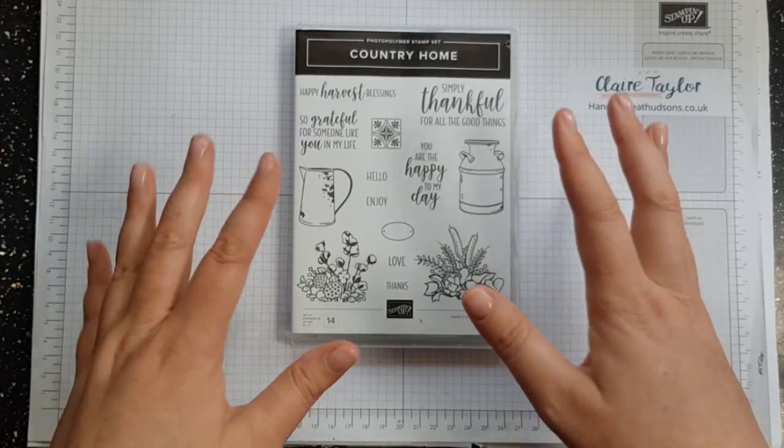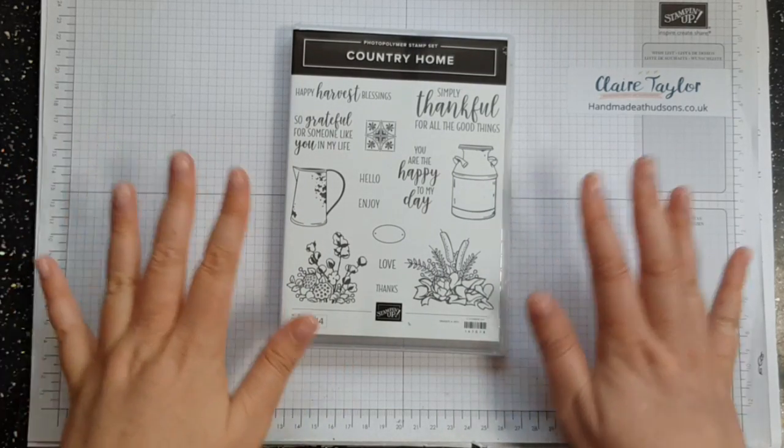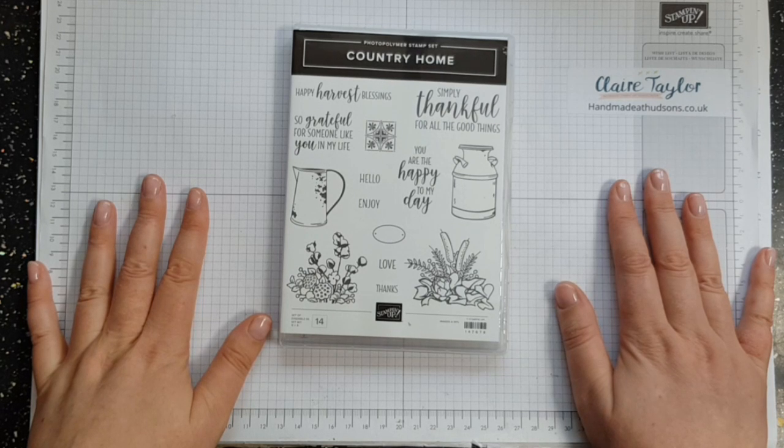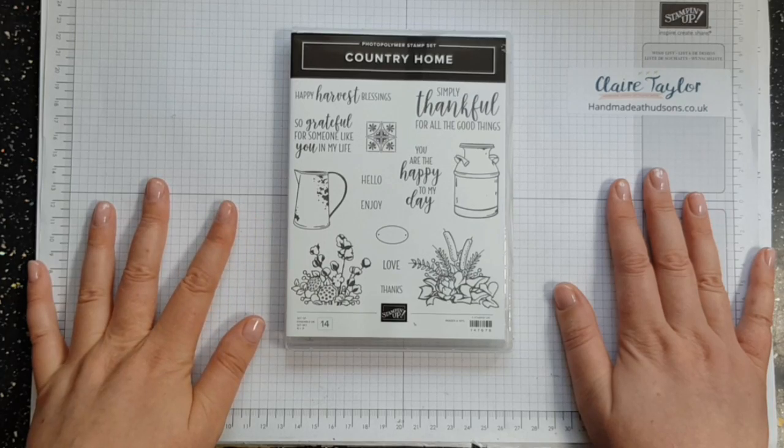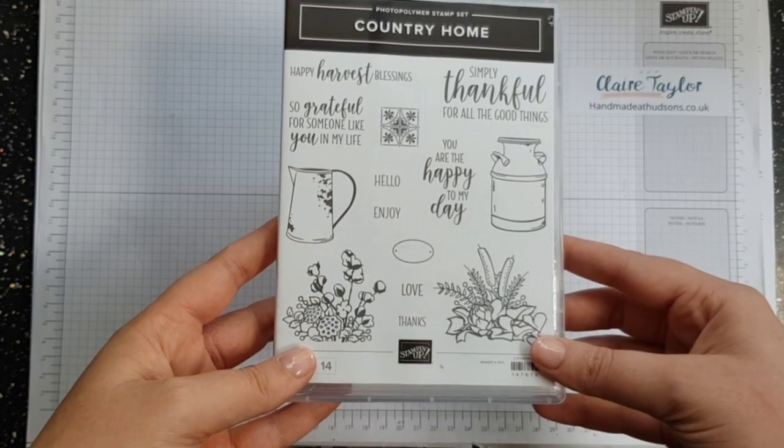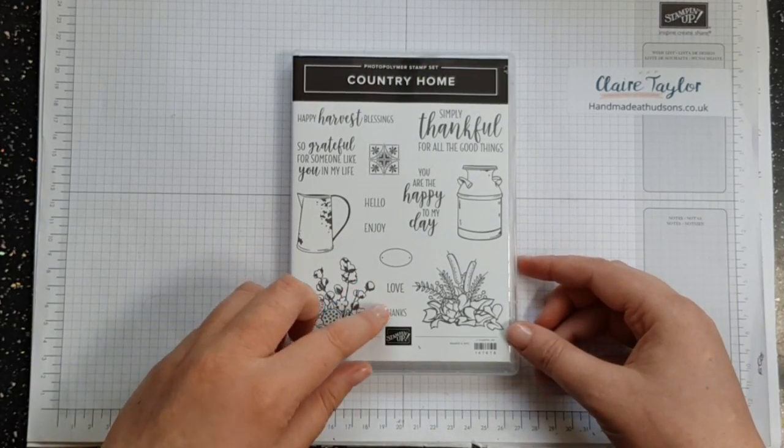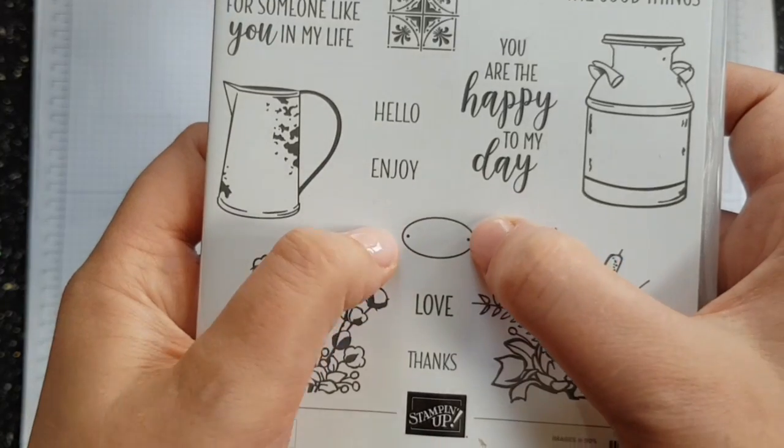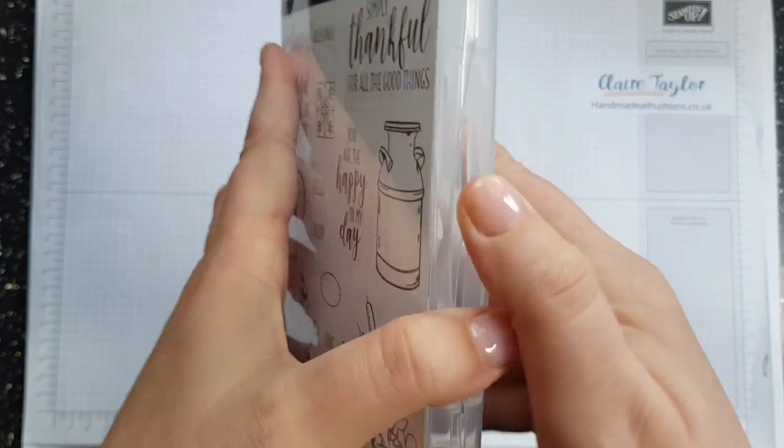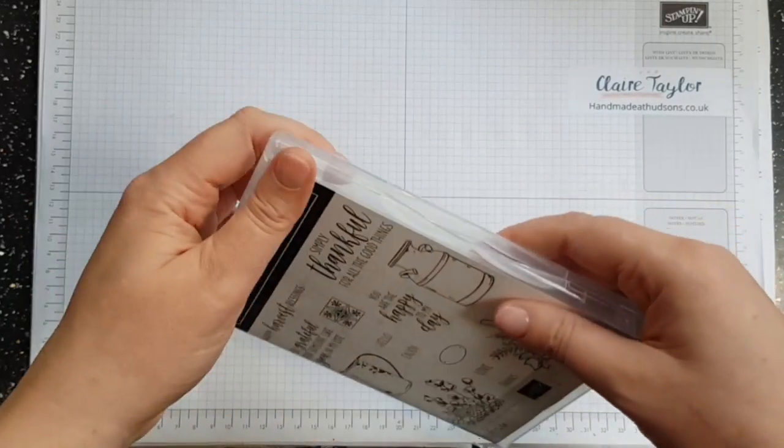Country Home, absolutely gorgeous. It is an autumnal stamp set, I think you can use it all year round. I love the little sentiments on here, so we've got happy harvest blessings, grateful for someone like you in my life, hello, enjoy, love, thanks, you're rather happy to my day, simply thankful for all the good things. And hello, enjoy, love and thanks will fit in to this little oval. It is a photopolymer and it is gorgeous and I will be showing you the rest of the suite in a later video.